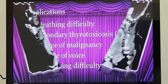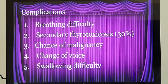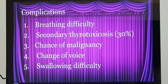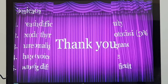If the patient diagnosed with multinodular goiter neglects the condition, as the disease progresses the thyroid gland becomes bigger in size, leading to breathing difficulty, change of voice, and swallowing difficulty. Not only that, there is a 2 to 5% chance that the patient may develop thyroid malignancy. These are the normal complications seen.